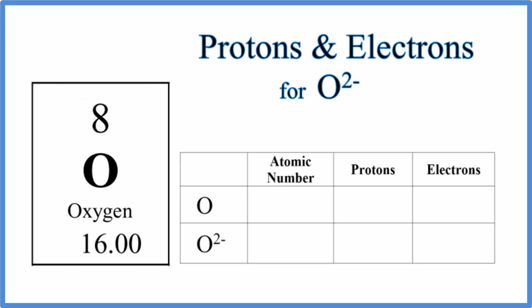So oxygen on the periodic table, atomic number is 8. And that atomic number tells us the number of protons. So for oxygen, the atomic number is 8, and the number of protons, that's 8 as well.